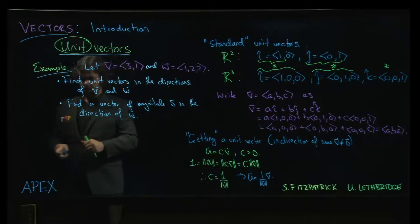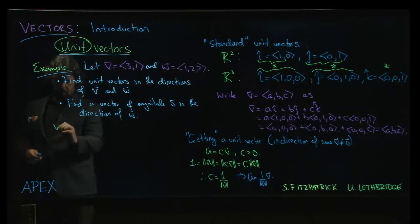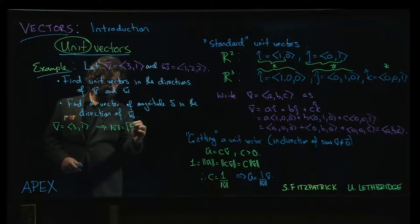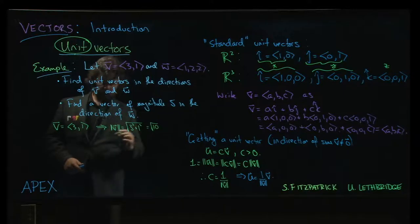Let's get the unit vectors. Alright, so v is the vector (3, 1), and that implies that the magnitude of v will be the square root of 3 squared plus 1 squared, which is the square root of 10.